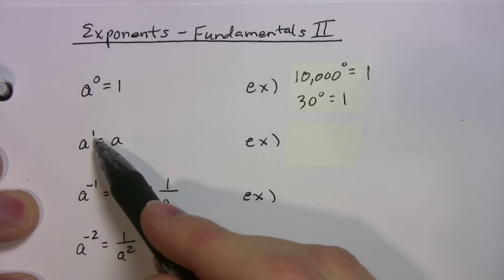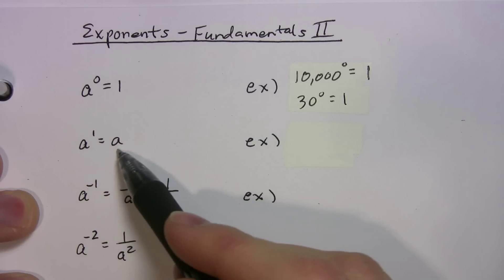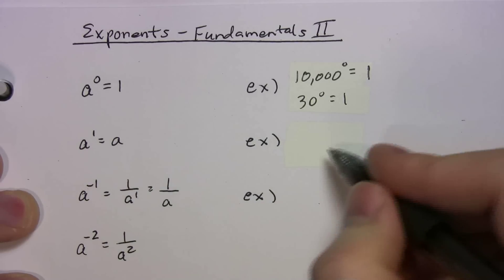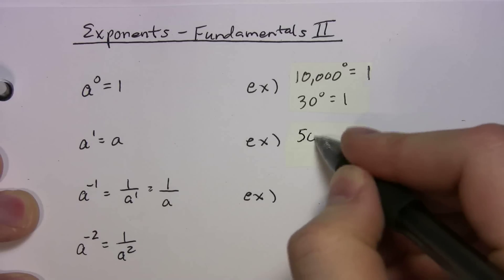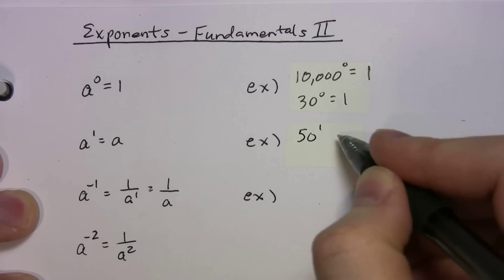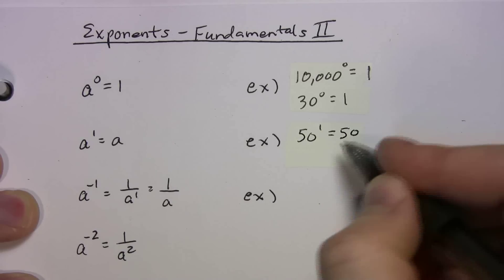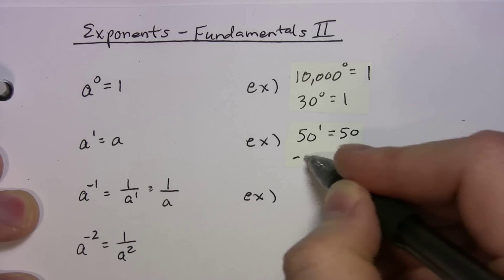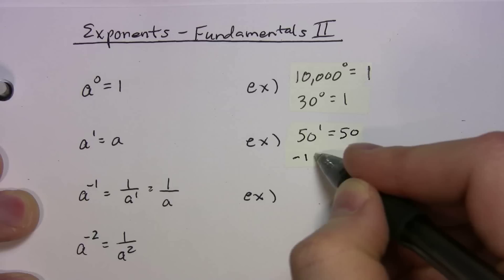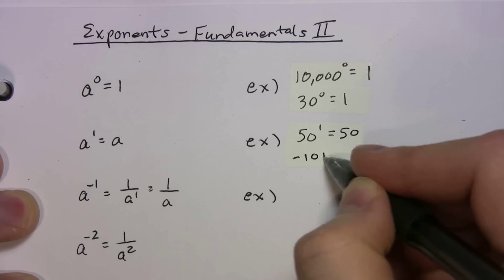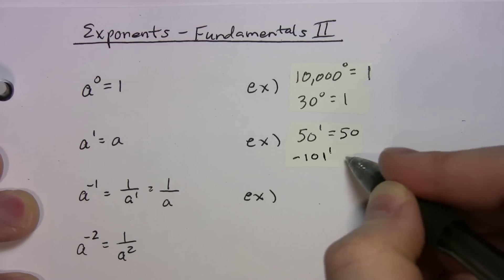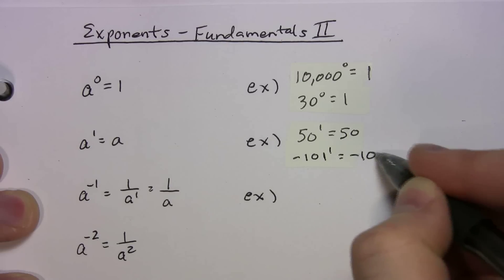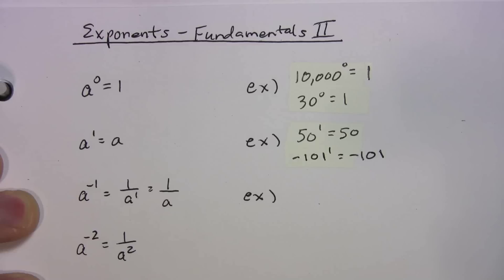Anything raised to the one power gives you the number back. So fifty to the first gives you fifty back. Negative a hundred and one to the one power gives you negative a hundred and one.